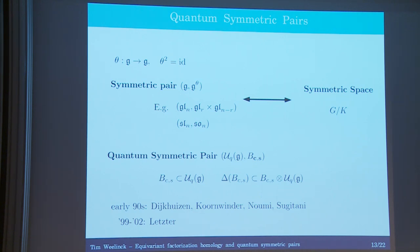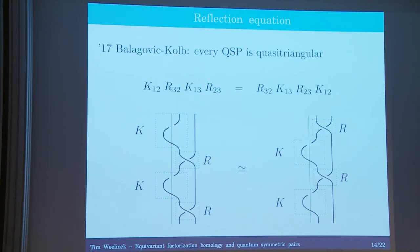As I promised, quantum symmetric pairs should have all the cool stuff quantum groups also have. The quantum group has the universal R matrix, and there is an analog for quantum symmetric pairs called the universal K matrix. This is due to Balagovic and Kolb, and they say every quantum symmetric pair is quasi-triangular — there is a universal K matrix which solves in every B-module a particular equation called the reflection equation.